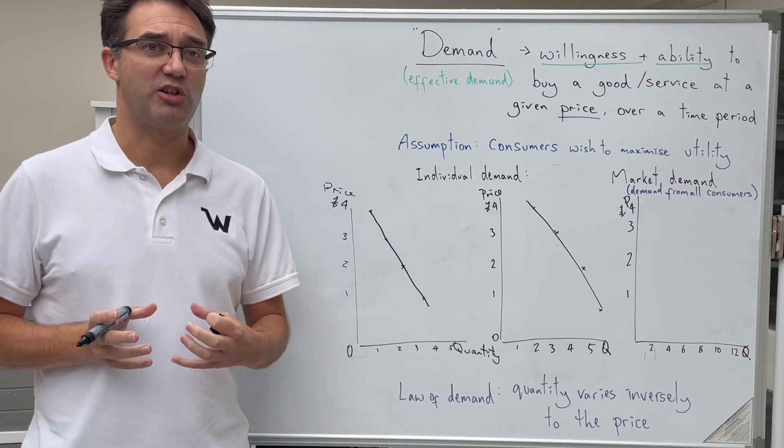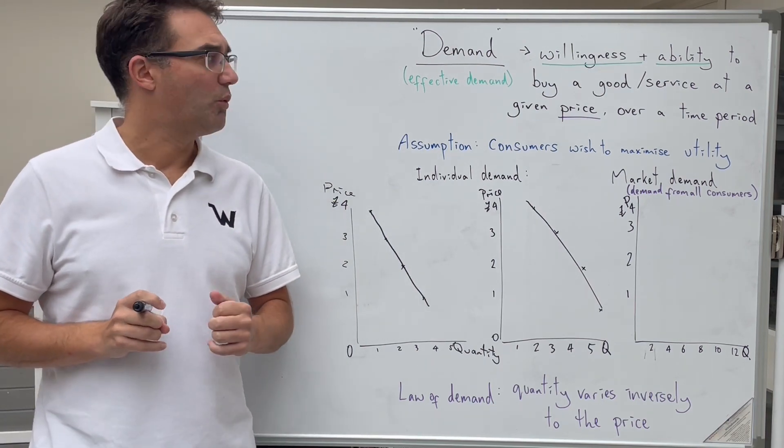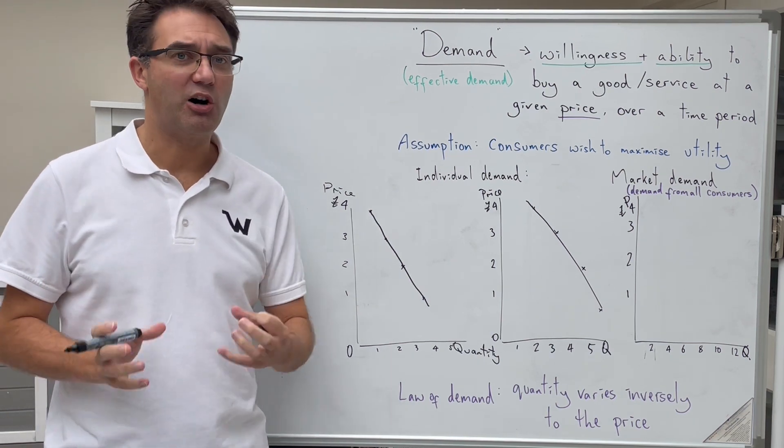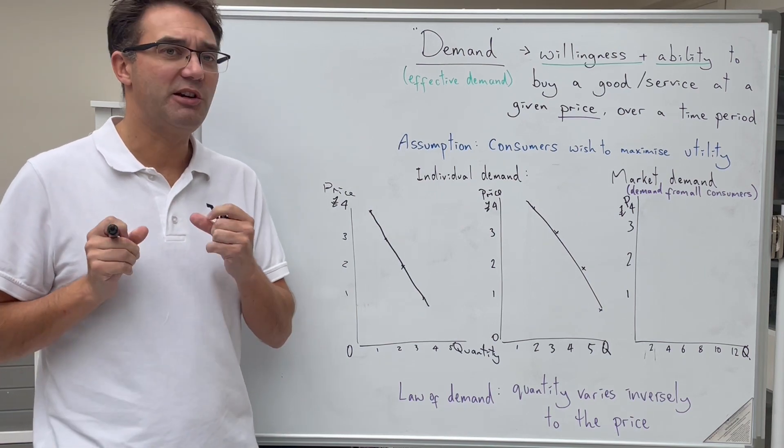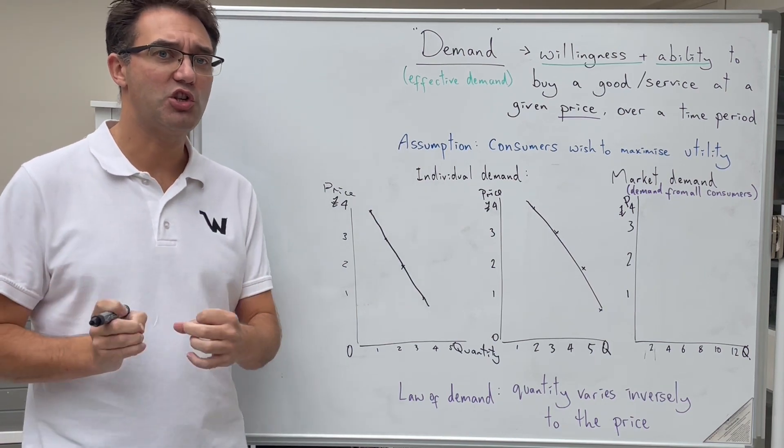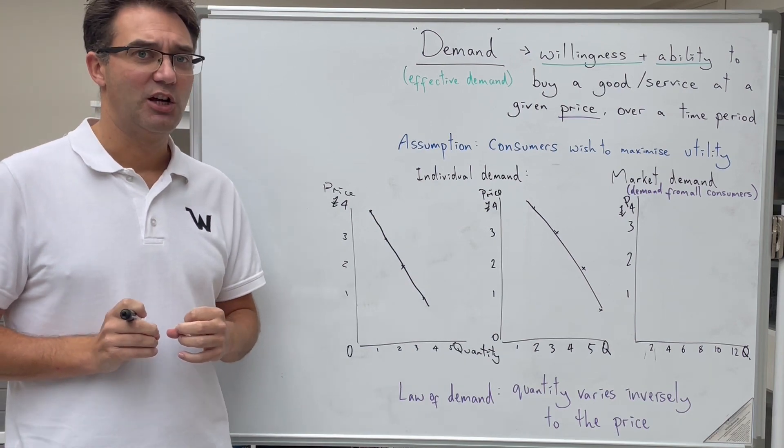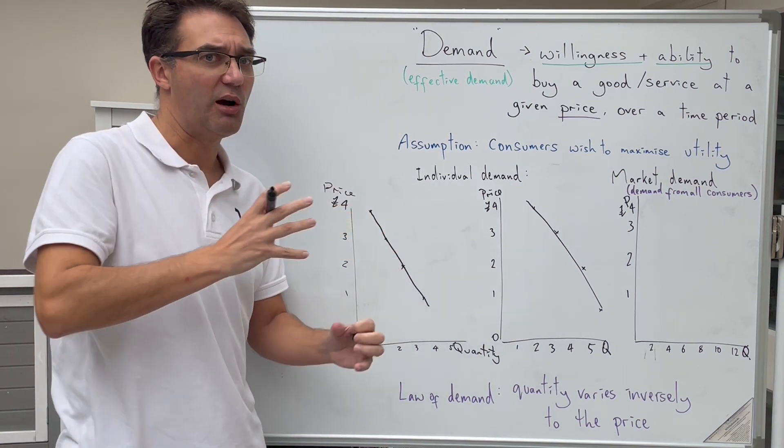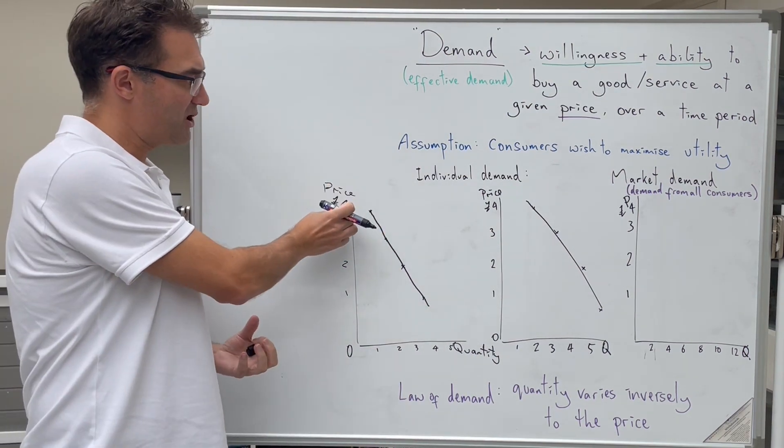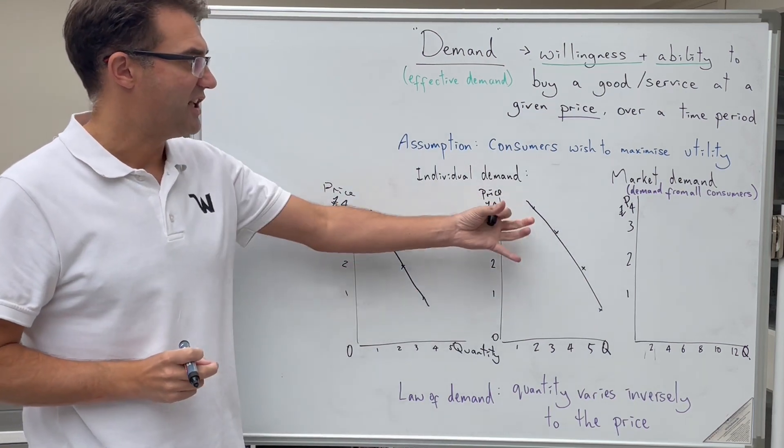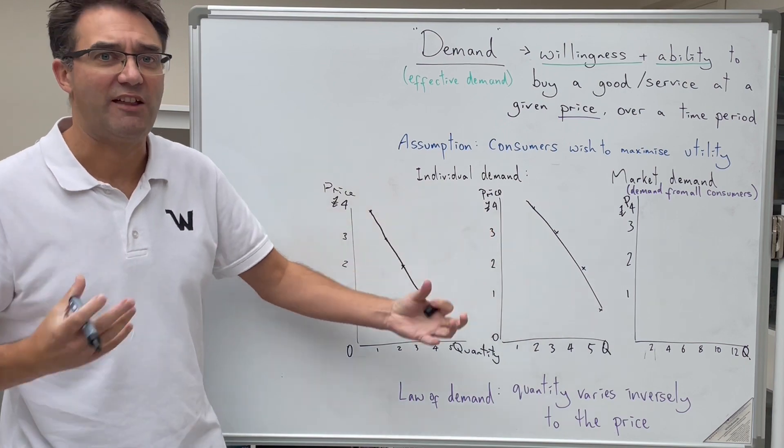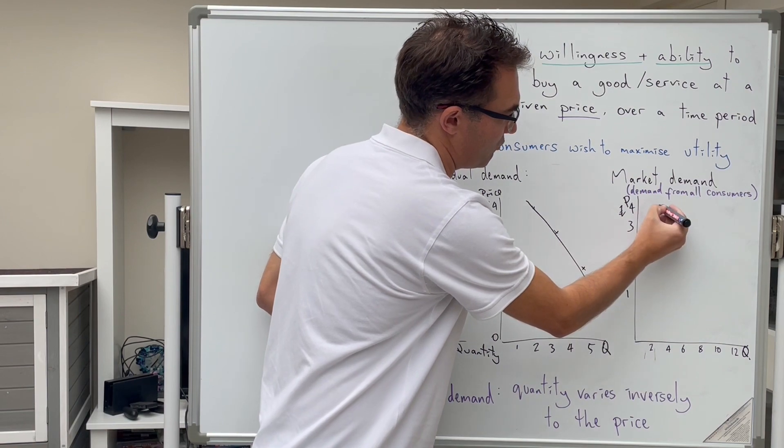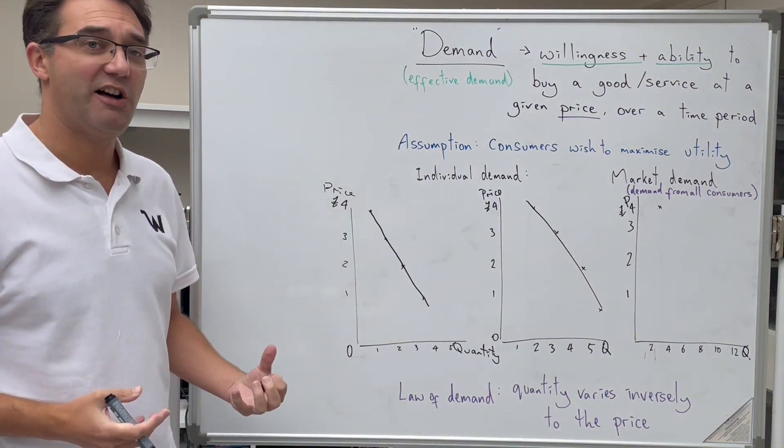Now, what businesses and what us as economists are interested in, the individual demand curve is nice, but what we're really looking at and what we'll use later to help determine prices is what we call the market demand curve. And this is where we are looking at the demand that comes from all consumers within that market. Really simple to construct these. We would take all of the individual demand curves and we add them together. So if the price was four pounds, I'm buying one sandwich, the next person is buying two sandwiches. We add them together. So the market demand is going to be at four pounds, there will be three sandwiches being bought.